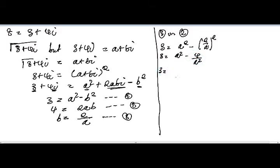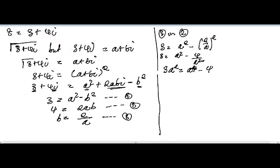To clear the fraction, we multiply through by a², giving 3a² = a⁴ − 4. Rearranging: a⁴ − 3a² − 4 = 0. To simplify factorization, let y = a², so the equation becomes y² − 3y − 4 = 0. Solving this gives two answers: a² = 4 and a² = −1. We always choose the positive real value.